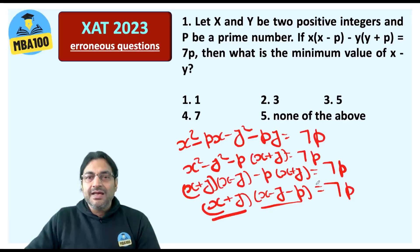And look at 7P. On the left hand side, you have two positive integers. Basically, you have a product of two positive integers. So 7P should also be a product of two positive integers.